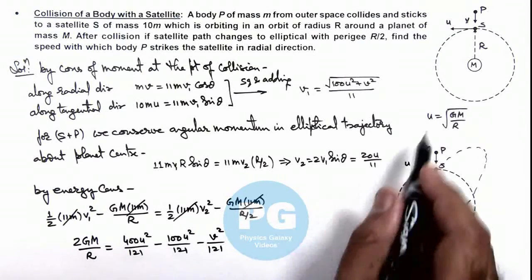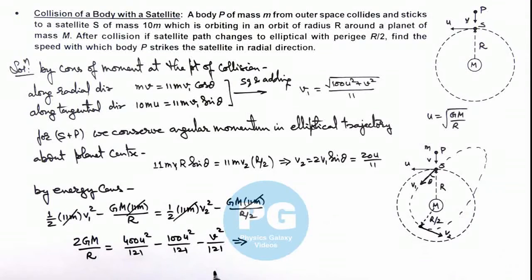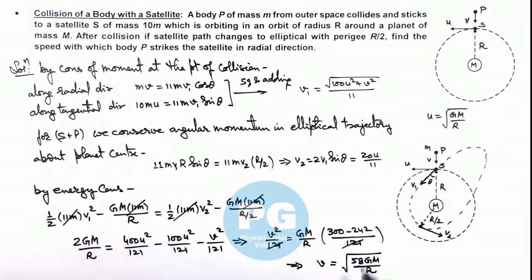Now we can substitute the value of u over here and simplify this to get the value of v squared. This relation further results: v squared by 121 equals GM by R multiplied by 300 minus 242 by 121. Here 121 gets cancelled out, and simplifying this gives us the value of v which is root of 58 GM by R. So this is the velocity with which the body P strikes the satellite, and that will be the result of this problem.